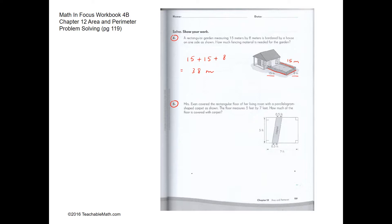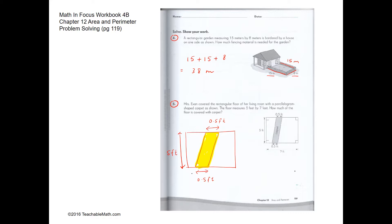Question 5 is a bit more tricky. We have to find out how much of the floor is covered with carpet. We can redraw the whole thing here to make it bigger. This is the carpet — we can highlight it and make it a different color. We need to find the area of this carpet. Let's put in the dimensions: this side is 0.5 feet, this side is also 0.5 feet, and this side is 5 feet.